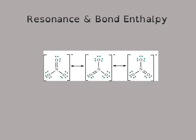This screencast is going to be about resonance and bond enthalpy. Sometimes when you draw a Lewis structure, there is an equally likely chance that you could draw a slightly different one that would match all the requirements. This is illustrated in the diagram shown here.